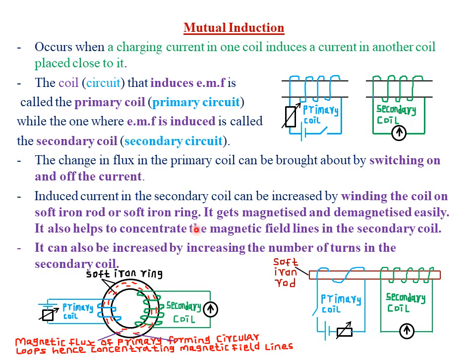Winding both coils on a soft iron ring also helps to concentrate the magnetic field lines in the secondary coil. When you wind them on a soft iron ring, it concentrates the magnetic fields between the secondary coil and the primary coil. The stronger the magnetic field, the more the induced current.